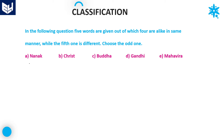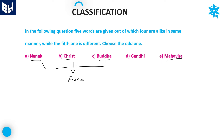Let's see the next question. The options are: Nanak, Christ, Buddha, Gandhi, and Mahavira. Most students fail to answer these kinds of questions. If you observe the names carefully — Nanak, Christ, Buddha, and Mahavira — all these are founders of religions.